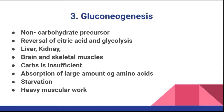Gluconeogenesis occurs under four conditions: first, when carbohydrate in the diet is insufficient; second, when there is a high intake of protein-rich diet resulting in absorption of large amounts of amino acids, such as in carnivorous animals that completely depend on high-protein diets; third, at the time of starvation when tissue proteins are broken down to amino acids; and fourth, during heavy muscular work when large amounts of lactic acid are produced by glycolysis.